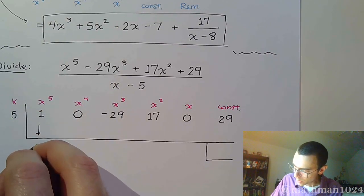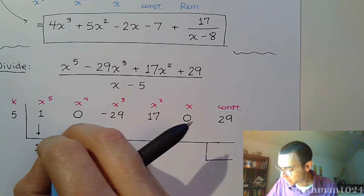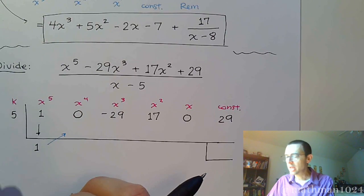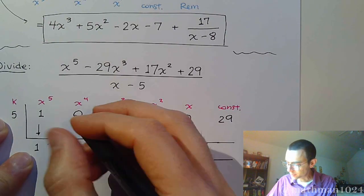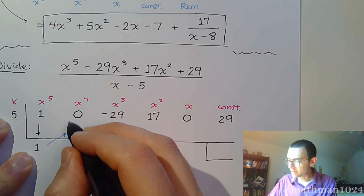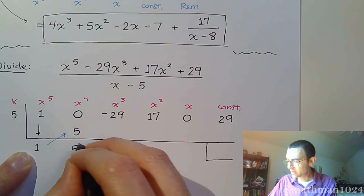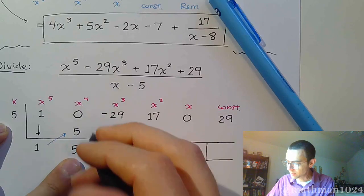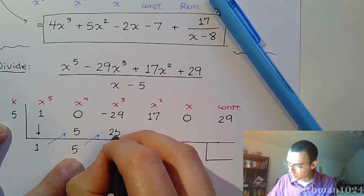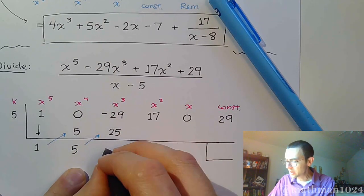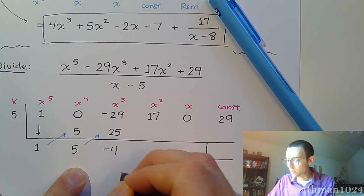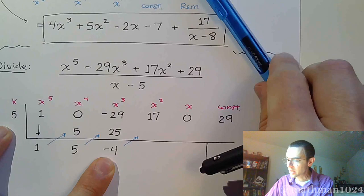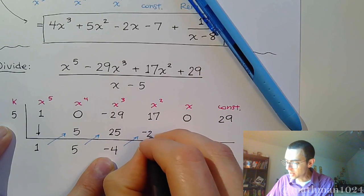So here, bring down the 1 and multiply. Each multiplication act that we take is going to be with the K value. So 1 times 5 is 5. Add these guys and I get 5. Now multiply times the K value again. So 25. Combine, we get negative 4. Multiply times K. That gives me negative 20.